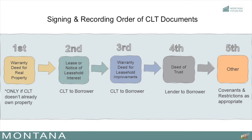There may be times when this has been recorded prior to the transaction, but there are also going to be times when the CLT is taking possession of the land at the same time. Then, the fully executed lease or notice of leasehold interest is the next to be recorded in order to establish the right for the house on the land to exist for the borrower, and should a foreclosure of the deed of trust happen, the lease will need to still survive. The permitted mortgages agreement and MBOH community land trust rider must be included with the notice of leasehold interest.